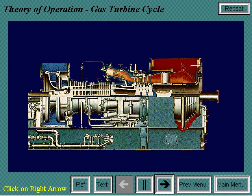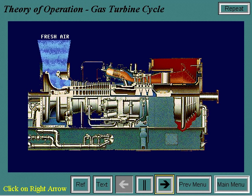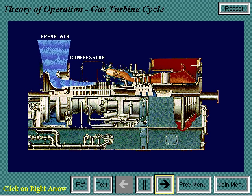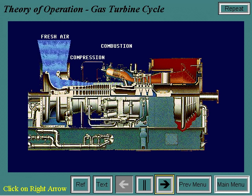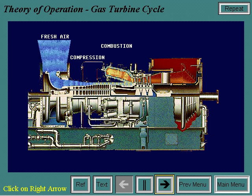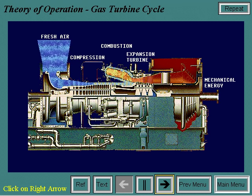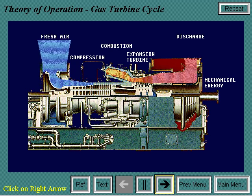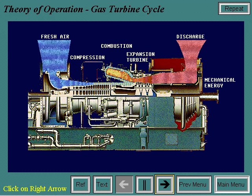A gas turbine operates by drawing in fresh air, then compressing it to a higher pressure through its axial flow compressor. Next, fuel is added to the compressed air and burned, which raises the energy level. This high-pressure, high-temperature air is then sent to an expansion turbine, where the gas energy is converted to the mechanical energy of a rotating shaft.